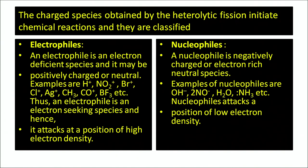Electrophiles are electron-deficient species; they can be positively charged or neutral. Here are some examples. Nucleophiles are negatively charged or electron-rich neutral species. Examples are OH⁻, NO⁻, water molecule, etc. Nucleophiles attack a position of low electron density, whereas electrophiles attack a position of high electron density.